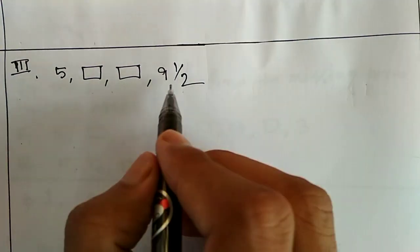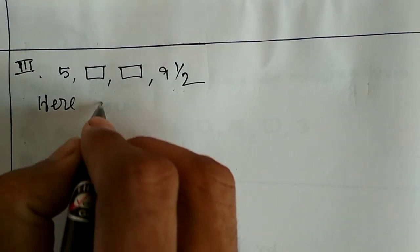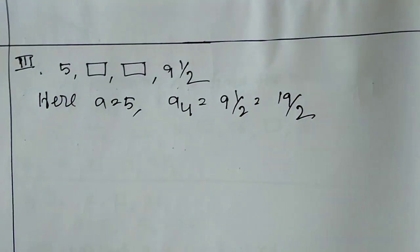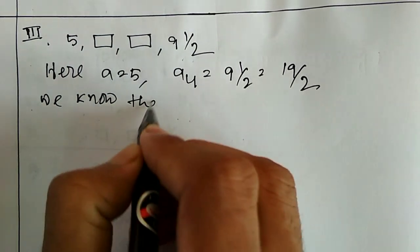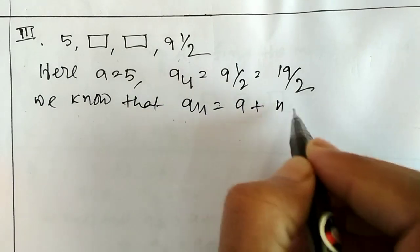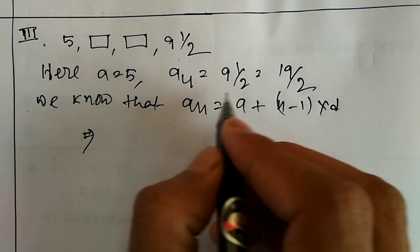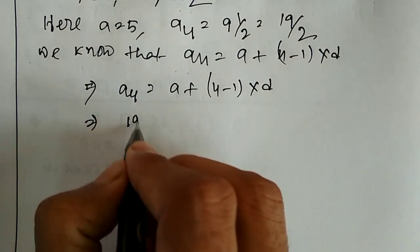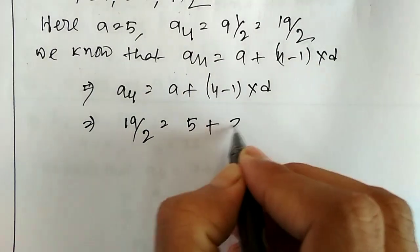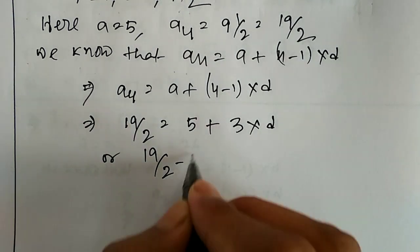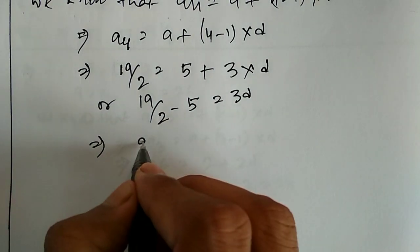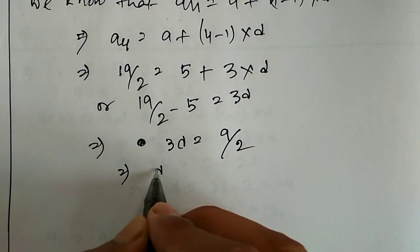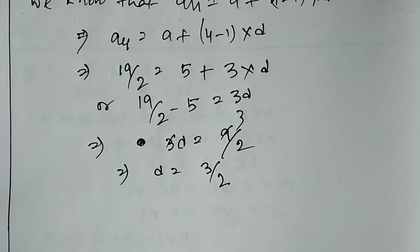Question number 3: 5, box, box, 9½. Here the first term is 5 and the fourth term is 9½, which equals 19/2. So a equals 5 and a4 equals 19/2. Using a4 equals a plus (4 minus 1) into d: 19/2 equals 5 plus 3d. Therefore 3d equals 19/2 minus 5 equals (19 minus 10)/2 equals 9/2, so d equals 3/2.